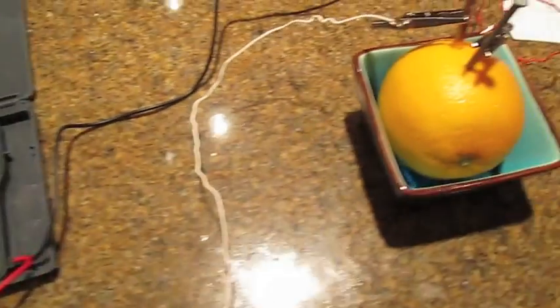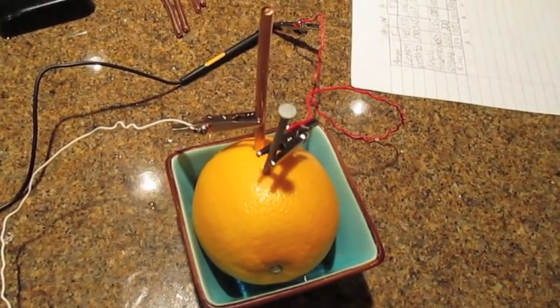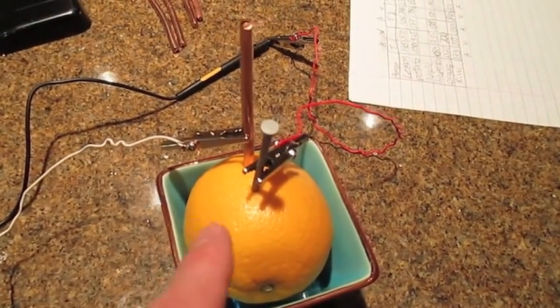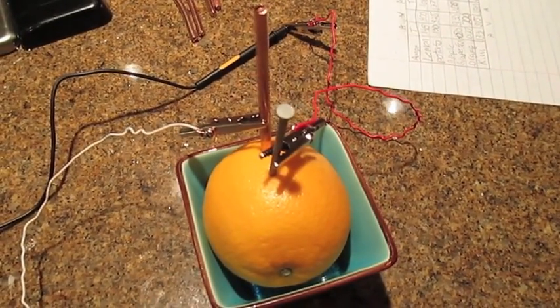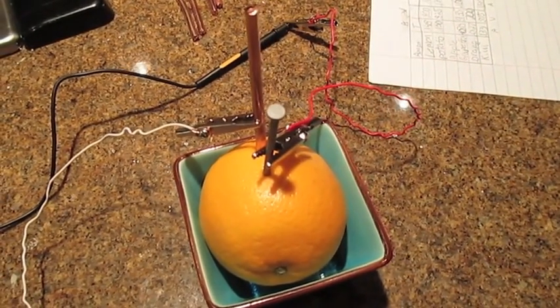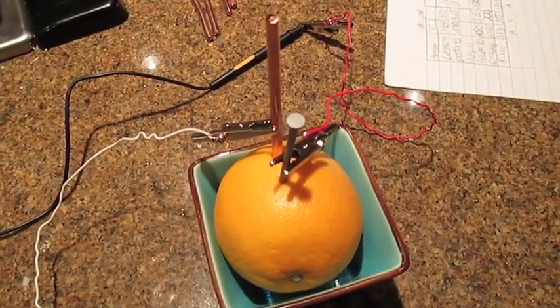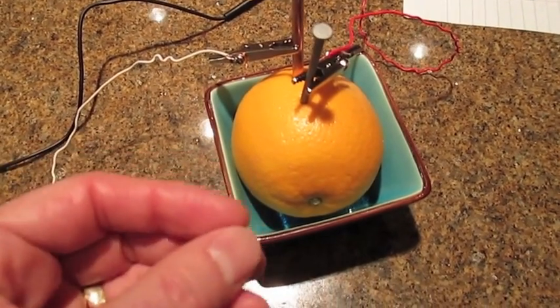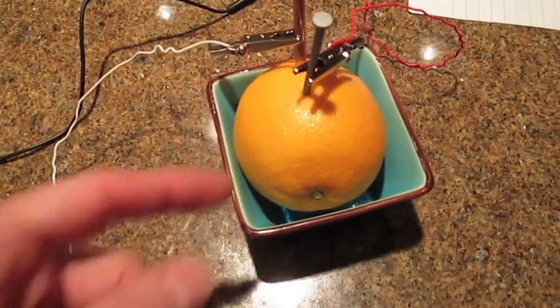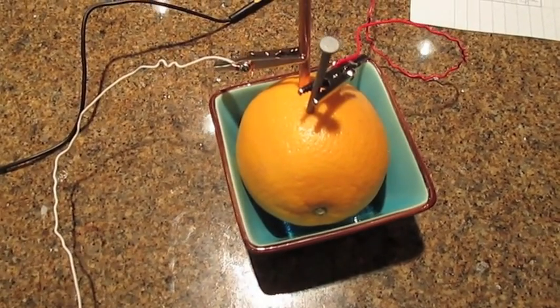What's interesting, there's some interesting things happening inside the fruit. What's happening is that the zinc is dissolving off of the nail. A zinc atom drops off 2 electrons which stay in the nail and the zinc atom floats out into the juice of the orange.